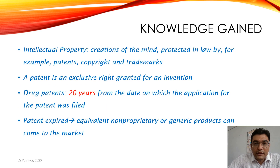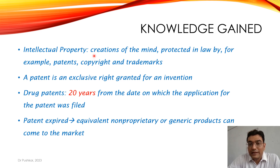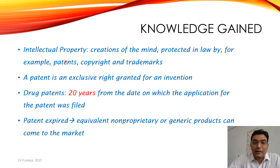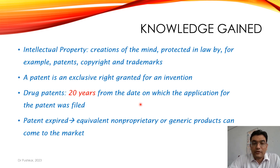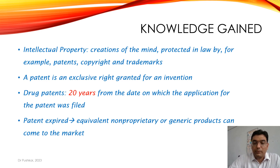So what knowledge have we gained? Intellectual property refers to creations of the mind, protected in law — examples are patents, copyright, and trademarks. A patent is an exclusive right granted for an invention. Drug patents are for 20 years from the date on which the application for the patent was filed. After patent expiry, equivalent non-proprietary or generic products can come to the market.